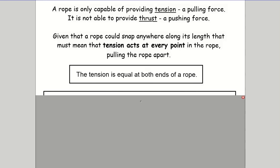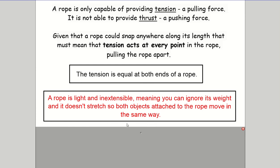When a question describes a rope as light and inextensible, 'light' means it weighs nothing - you don't have to account for the rope's own weight. 'Inextensible' means unlike an elastic band, where pulling hard just stretches the band without moving the object, with a rope once you start moving, everything moves equally. So if one block is accelerating at 3 m/s², so is the other block. If one block is traveling at 5 m/s, so is the other block.